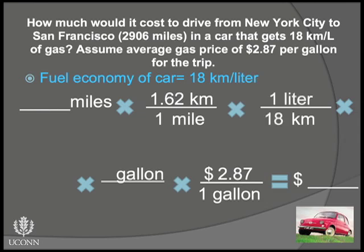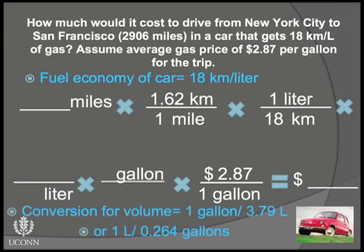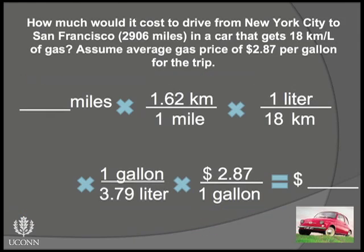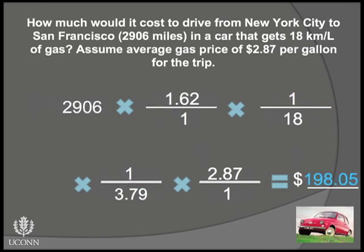Again, move the unit on top of our last conversion factor to the bottom of the next. We can ask ourselves if it is possible to relate the unit on the bottom of the last factor to the unit on the top of the next one. In this case we can, because we have a relationship between our two units of volume. So we can combine these two factors into one and add the values from our known relationship. Now we have all of the conversion factors we need — all the units cancel correctly, and we are left with the unit we want. Adding back our starting value, removing units, and doing the math, it will cost $198.05 to drive from New York City to San Francisco.